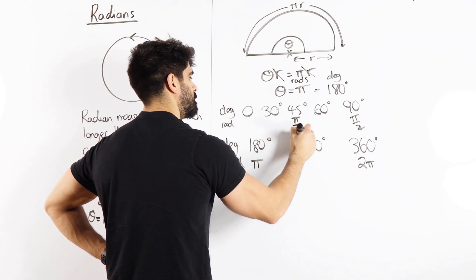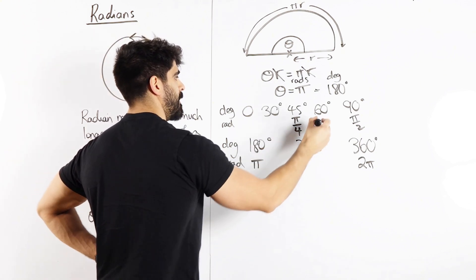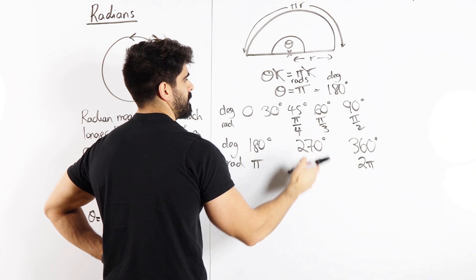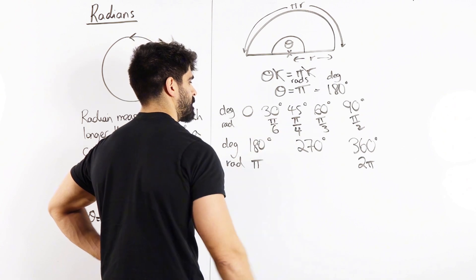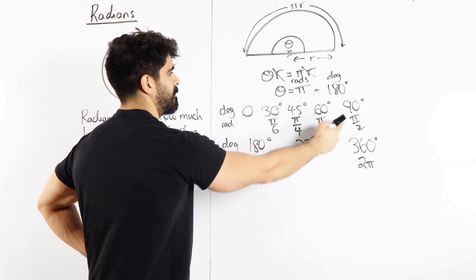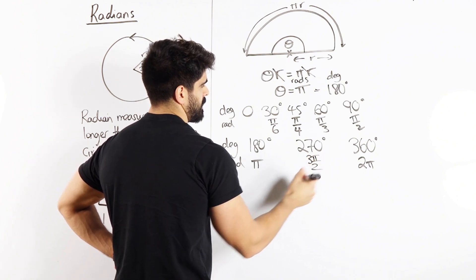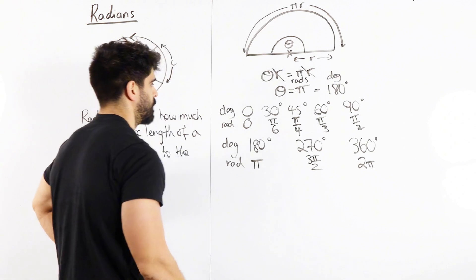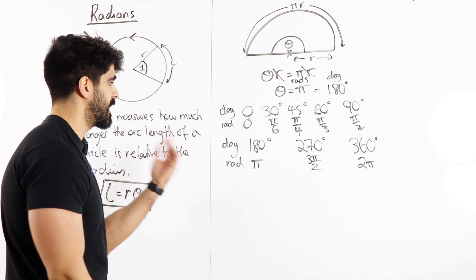If I divide this by 3, I get 60, so I get pi over 3. And then if I half that, I get 30 degrees, which would be pi over 6. 270 could come from multiplying this 90 by 3, so 3 pi over 2. And then it doesn't matter whether you're in degrees or radians, if the angle is 0. And that's that.